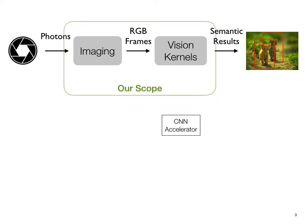Our key insight is that by expanding the research scope to the end-to-end application pipeline, we uncover hidden optimization opportunities. The particular optimization we demonstrate in this paper is to share motion metadata between the imaging stage and the vision kernels, which would allow us to greatly reduce the amount of computation at the system level.